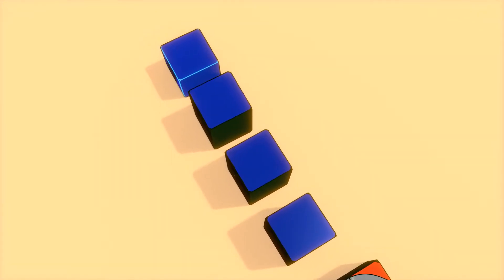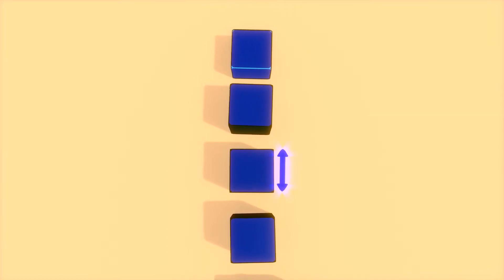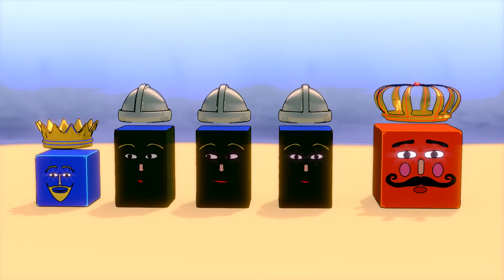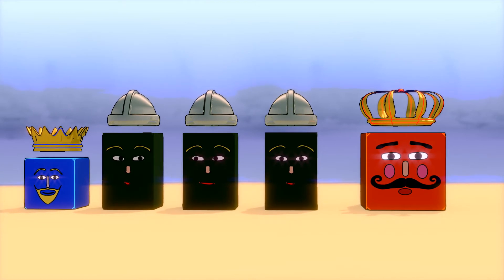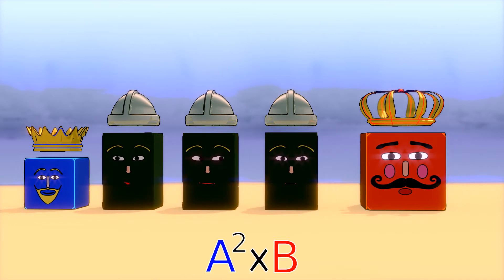The soldiers of King A-cubed have a square face and the side of the square is equal to the length of King A. But the height of these soldiers is the same as that of King B-cubed. Therefore, these soldiers were called A-squared times B.